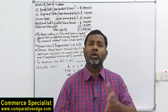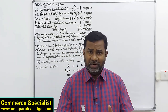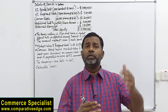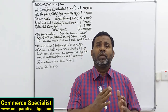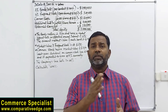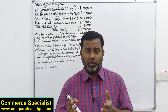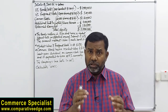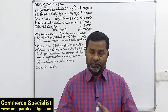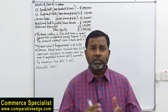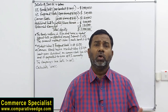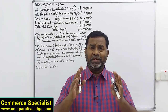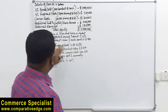Once we have the weights of individual sources of funds, we simply multiply by the respective cost and we get the weighted average cost of capital. Having said that, there are many things to consider. Let's jump into the discussion of weighted average cost of capital, which we generally call WACC.